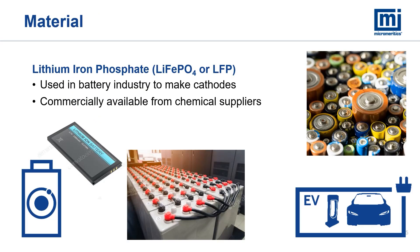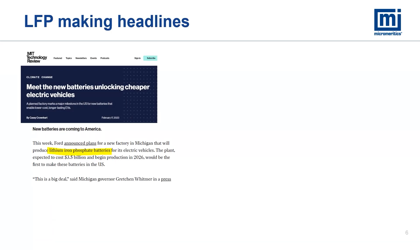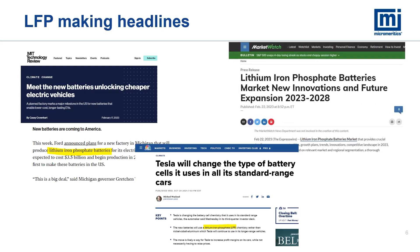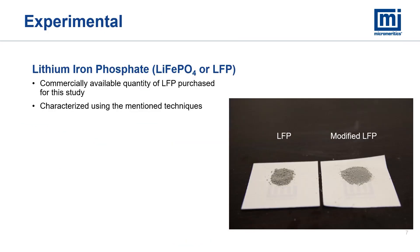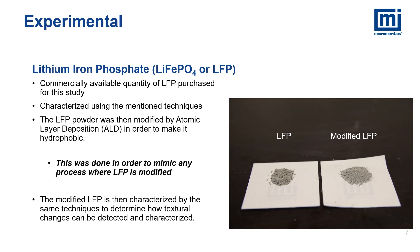The material we used is a lithium iron phosphate, or LFP. This material is used in the battery industry to make cathodes. It's commercially available from chemical suppliers and widely used in the battery industry. We chose LFP because it seems to be in the headlines a lot — big names like Ford and Tesla are using it as part of their battery manufacturing process. We purchased a large quantity of LFP from a commercially available source, characterized it using the above-mentioned techniques, then had it modified by atomic layer deposition, or ALD, to make it hydrophobic. This was done to mimic any process where LFP is modified. The modified LFP was then characterized by the same techniques to see how textural changes can be detected and characterized.